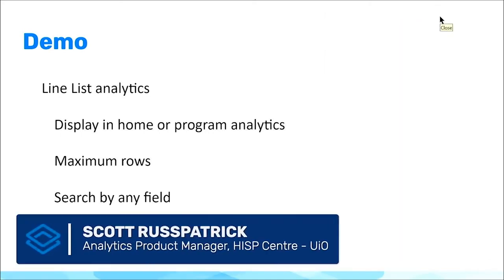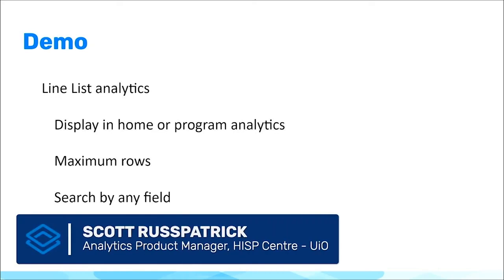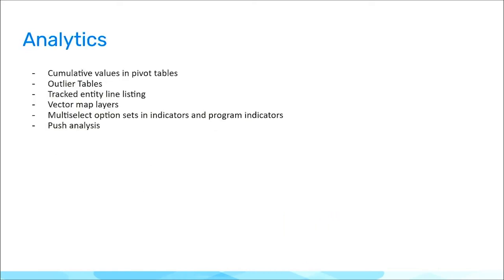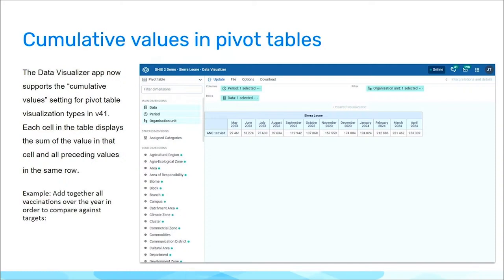Hi, everyone. I'm Scott Russpatrick, the analytics product manager, and I'm going to take us through what the analytics team has been working on for the last year. Starting simply: cumulative values in pivot tables. It has been a very long request to be able to add data over time directly in the pivot table without having to make an indicator or program indicator. It's a really important use case especially for immunization — totals of children being immunized every month, doses being distributed every month — and you want to compare those running totals against your annual targets.